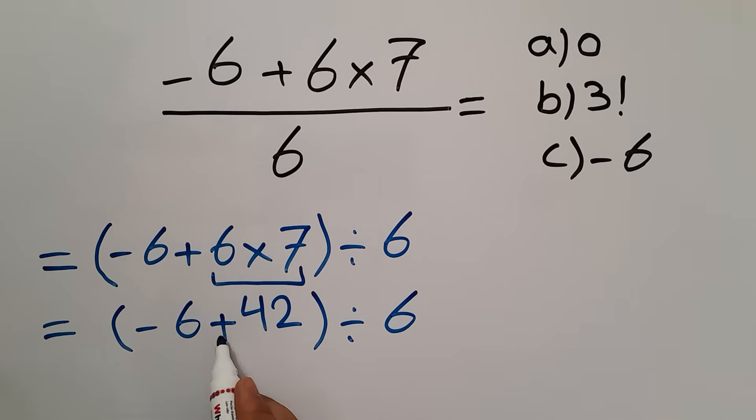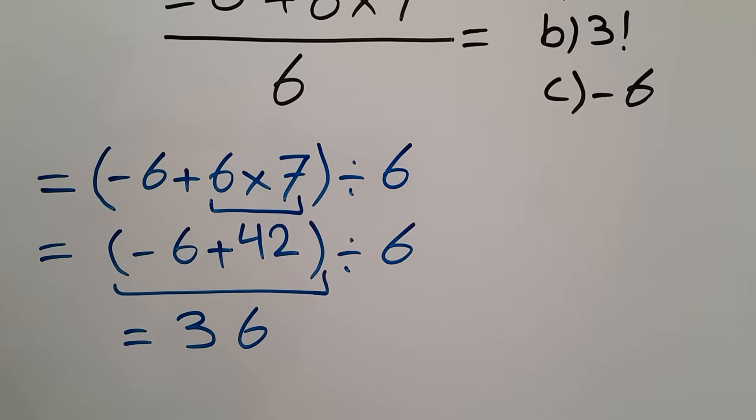Now, negative 6 plus 42 equals 36. So we have 36 divided by 6. And this is equal to just 6.